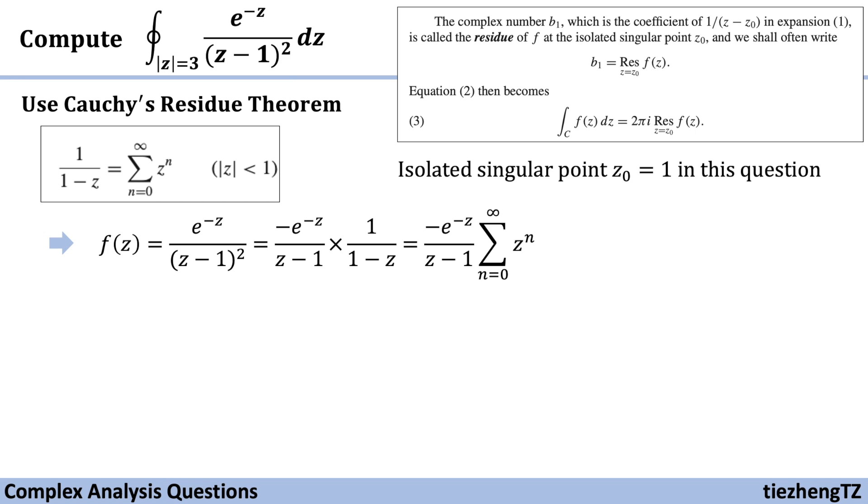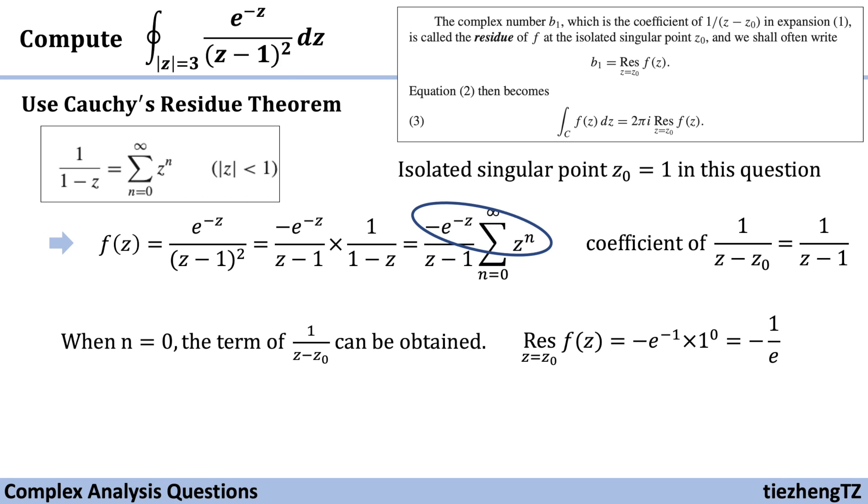In order to get the coefficient of the term 1/(z-z₀), and in this case, which is 1/(z-1), we know we should make n = 0. Because in this case, we have 1/(z-1) in the f(z) function. So in this case, the corresponding residue when z₀ = 1 at the isolated singular point is -e^(-1) × 1^0.